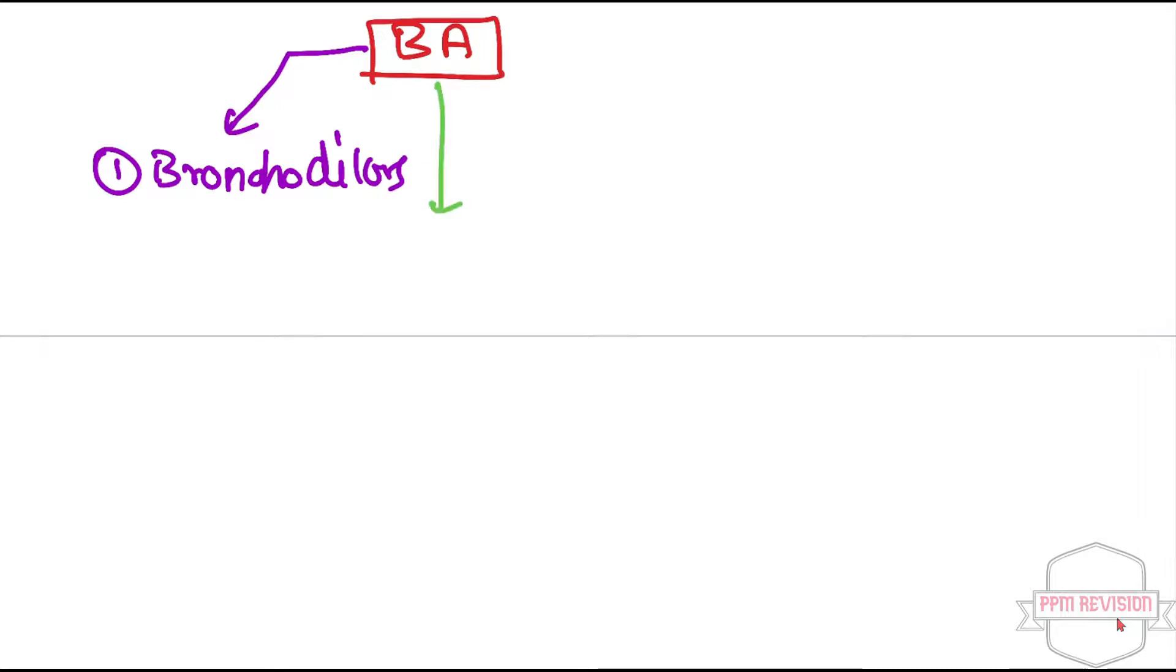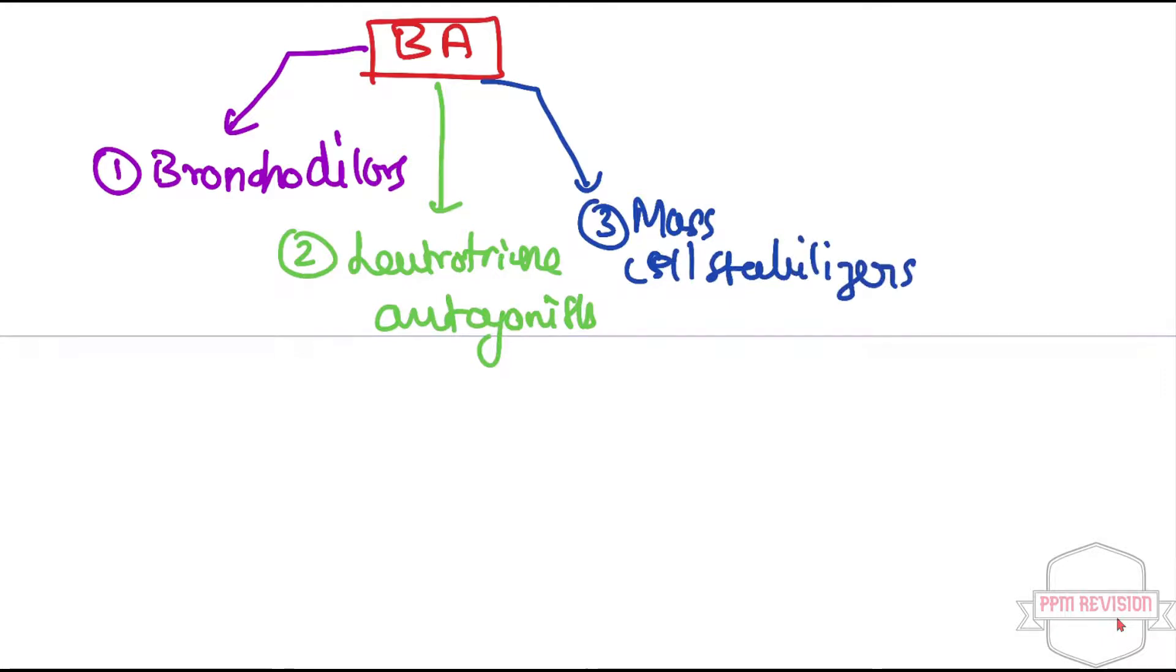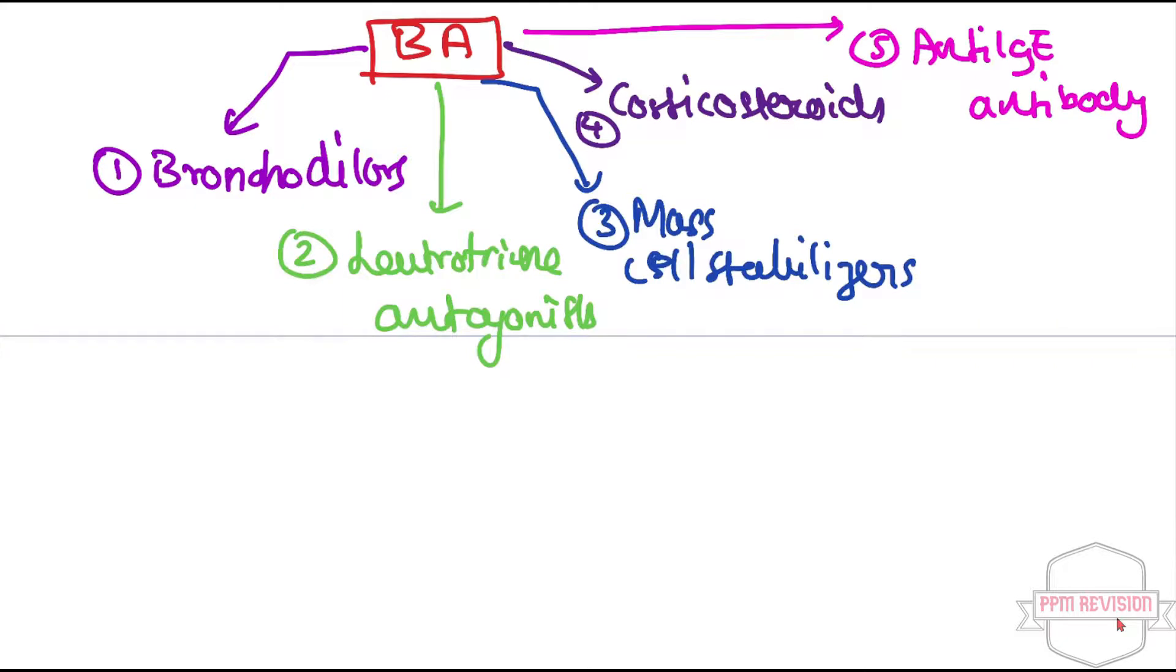Second one being there is leukotriene antagonist. Third, there is mast cell stabilizers. Fourth, there is corticosteroids, and the last class is anti-IgE antibody. Let's just read it out again. So we have bronchodilators, there is leukotriene antagonist, there is mast cell stabilizers, there is corticosteroids, and last we have the anti-IgE antibody.